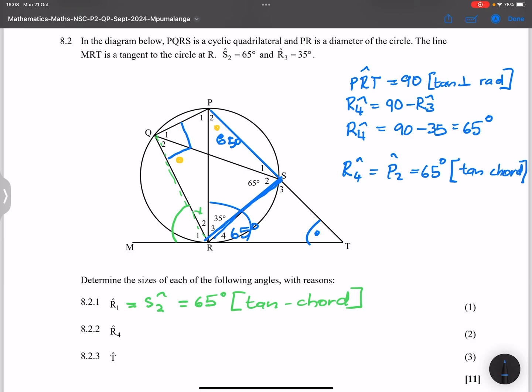And in that case, in triangle PRT, we know that PRT, we've already stated that it is equal to 90 degrees, we stated it there. So PRT plus P2 plus angle T is equal to 180 degrees, and that's sum of angles in a triangle.